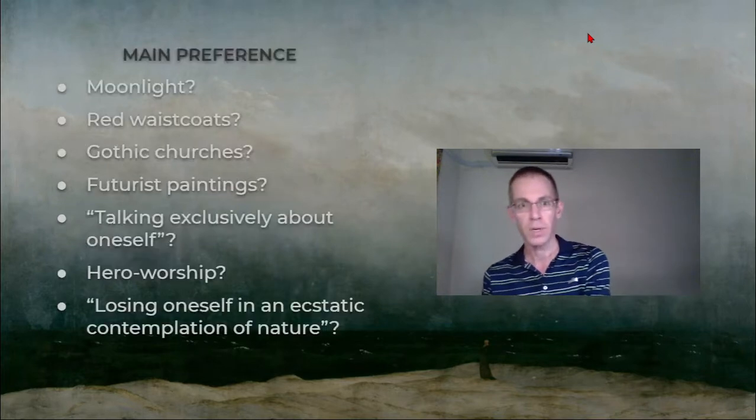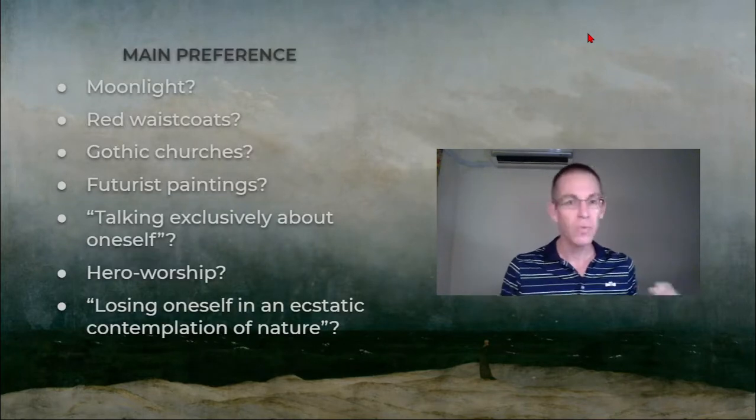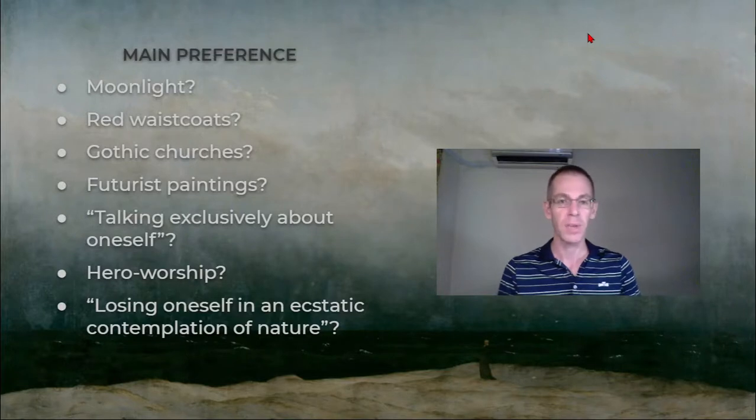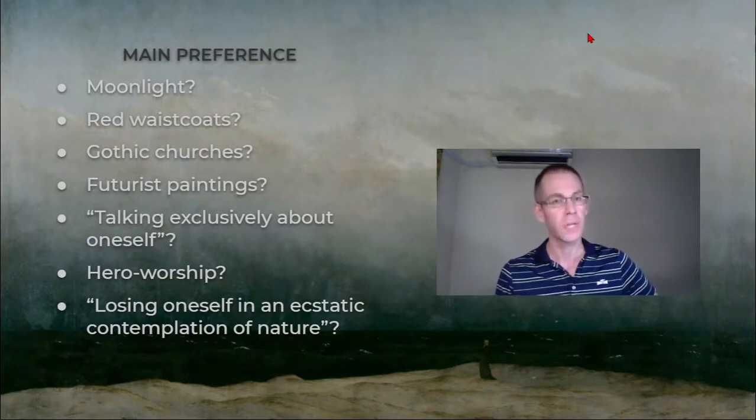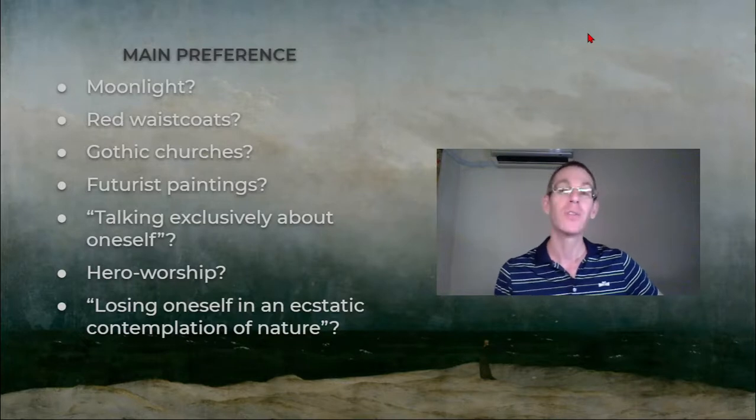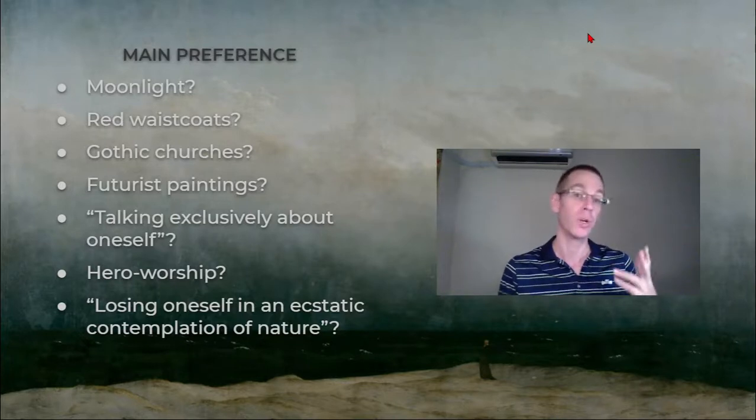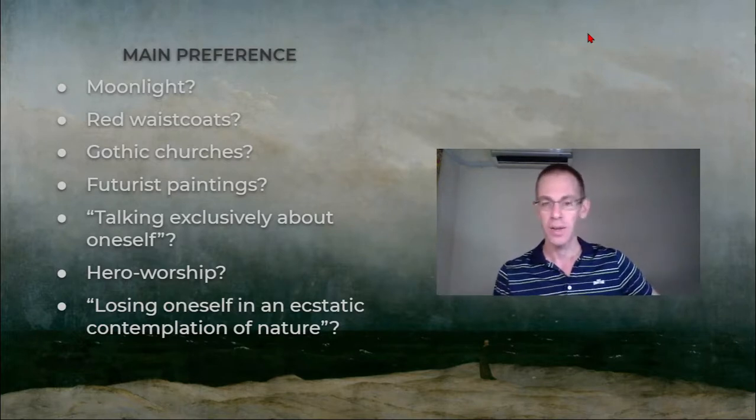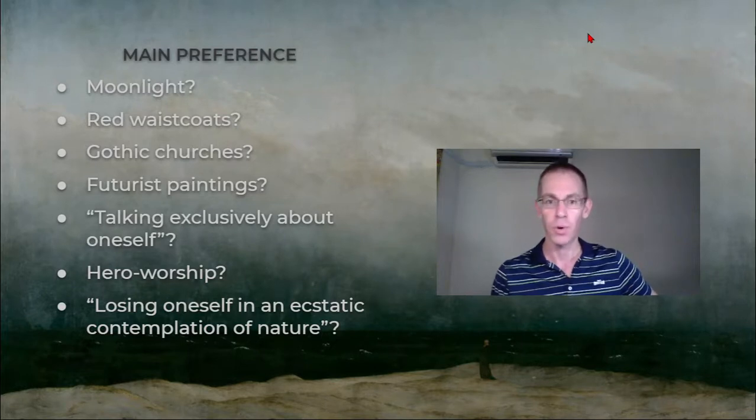And what about the preferences—the things that romanticists like? These are suggestions by many others, I suppose they're not mutually exclusive. Some people have said moonlight or red waistcoats, Gothic churches, futurist paintings, talking exclusively about oneself, hero worship, losing oneself in an ecstatic contemplation of nature. So which of these is the key kind of thing that romanticists prefer or do?